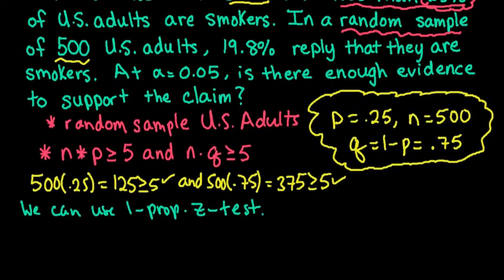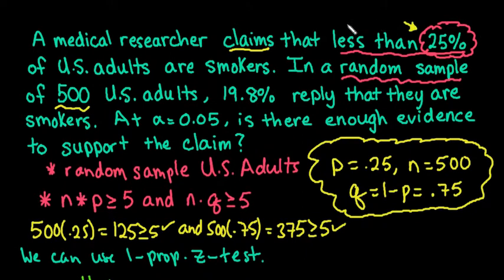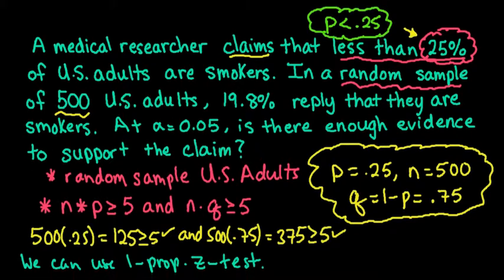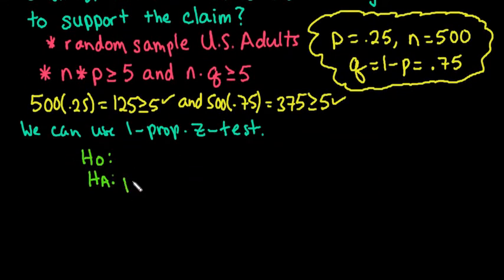All right, so our next step is to set up the null and the alternative. The null and the alternative always come from the claim. So our claim is that our proportion is less than 0.25. So this is the claim written in symbolic notation. So now we have to figure out where that goes. If it's a statement of equality, it always goes in the null. If it's a statement of inequality, it always goes in the alternative. So we would say that P is less than 0.25. Some textbooks use pi instead of P. That's acceptable. That's the Greek letter for P. But a lot of textbooks just use P because using pi for anything other than 3.14 is confusing.